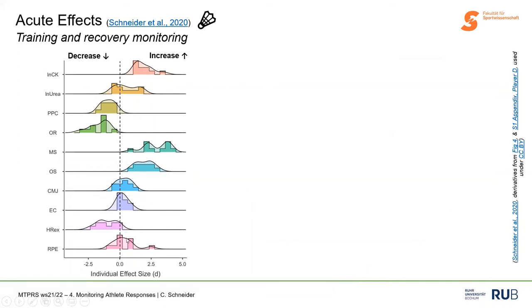Here's a summary of the individual effect sizes — the changes from Monday to Friday in different measures: creatine kinase, urea, RPE scales, jumping, and heart rate responses. On average, creatine kinase was increased in almost all athletes on Fridays compared to Mondays. Perceived recovery was reduced and perceived stress was increased — athletes felt less recovered and more stressed on Fridays. We also observed some changes in exercise heart rate, no changes in RPE, no changes in jumping, and no changes in urea on average.